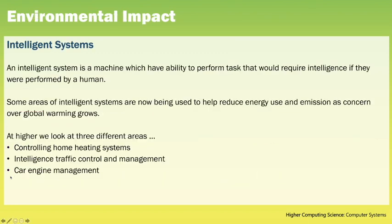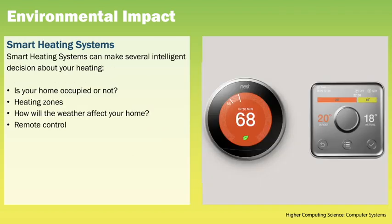At Higher, when talking about environmental impact, we look at how intelligent systems can be used to reduce energy use and emissions as concerns over global warming grow. An intelligent system is a machine with the ability to perform tasks that would require intelligence if performed by a human. Smart heating systems, for example Nest or Hive, can make intelligent decisions about your heating — such as whether your home is occupied — using motion sensors or GPS data from your smartphone, so heating is reduced when you're not at home. Most smart heating systems can be connected to the internet, allowing manual adjustment via a smartphone app from anywhere.